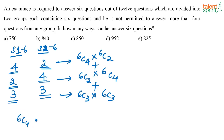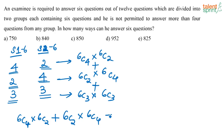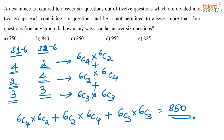So the answer is: 6C4 × 6C2 + 6C2 × 6C4 + 6C3 × 6C3. That is, either he selects 4 from the first section and 2 from the second, or 2 from the first and 4 from the second, or 3 from each section. Solving this gives the answer as 850, which is option C.